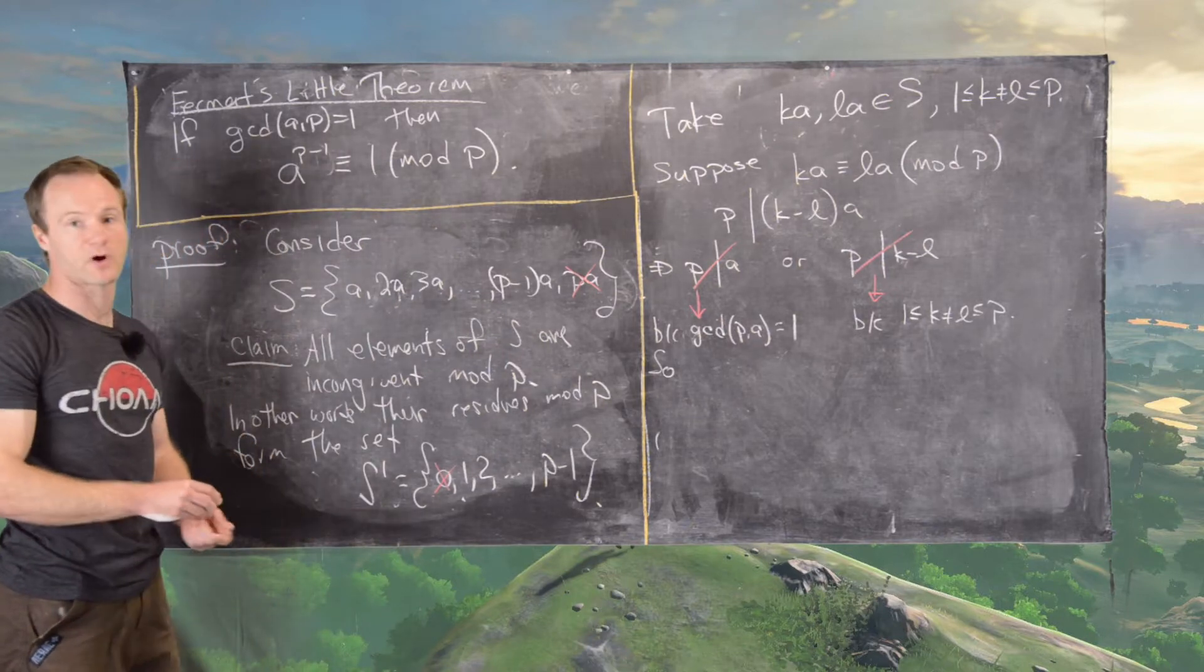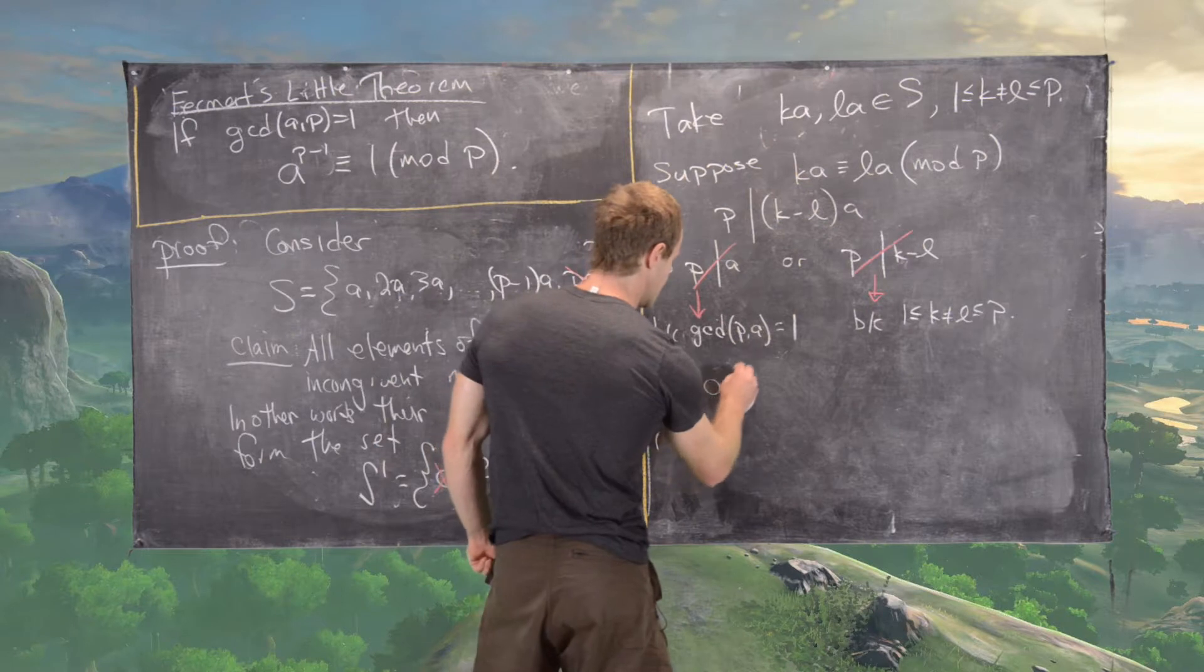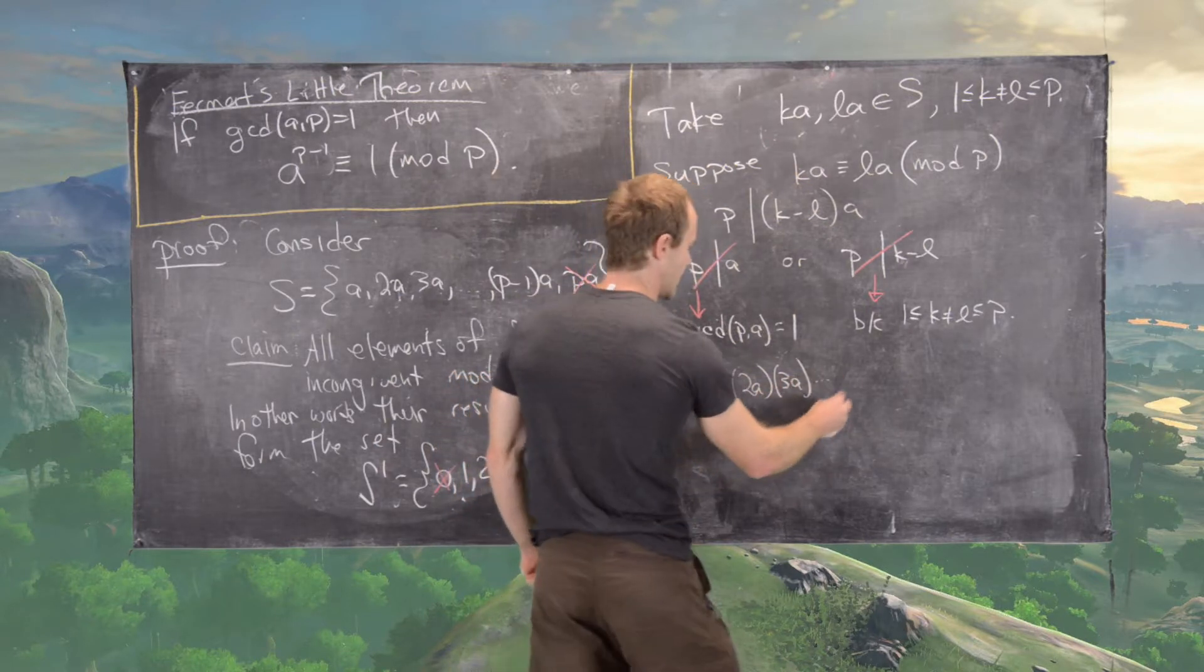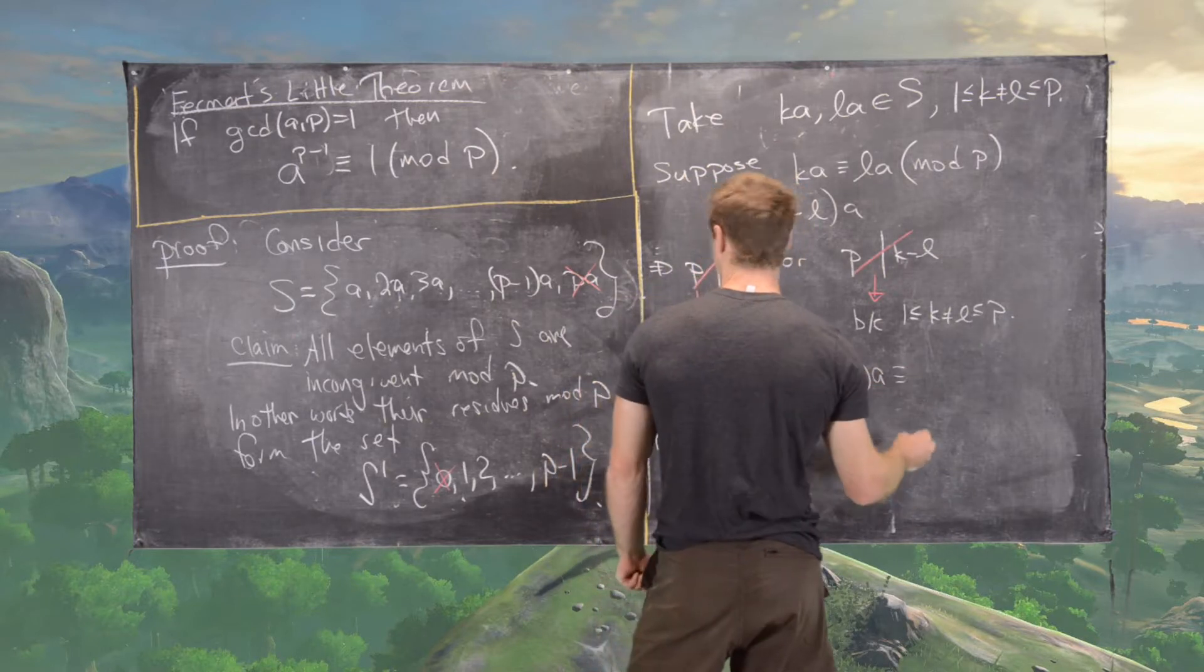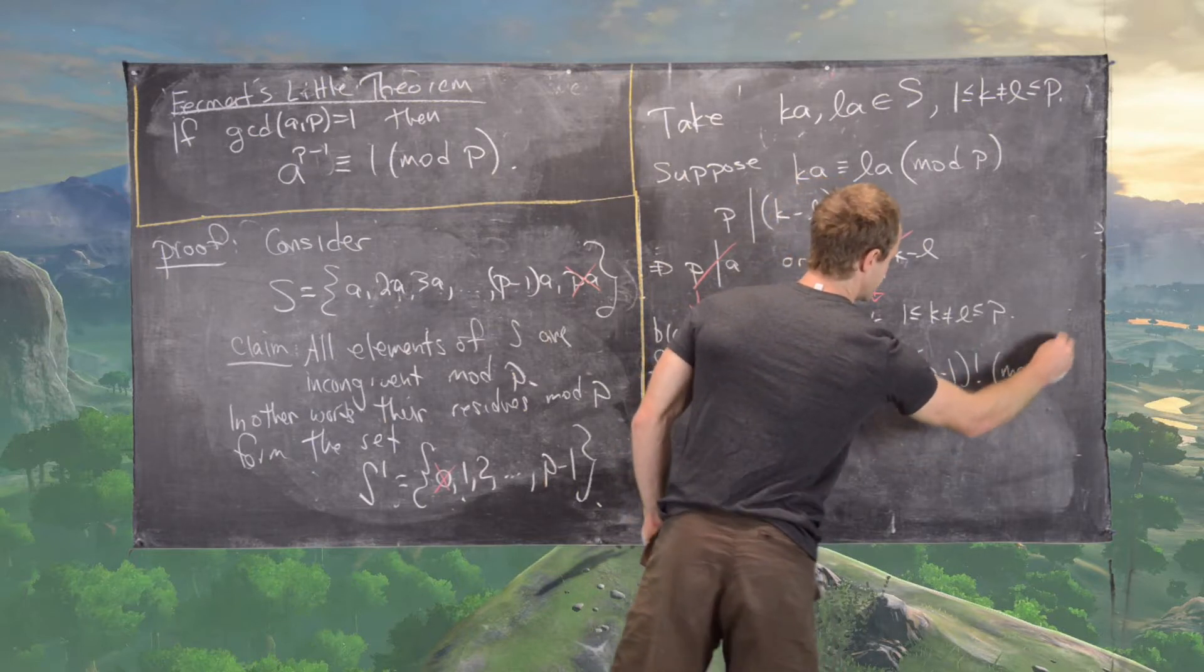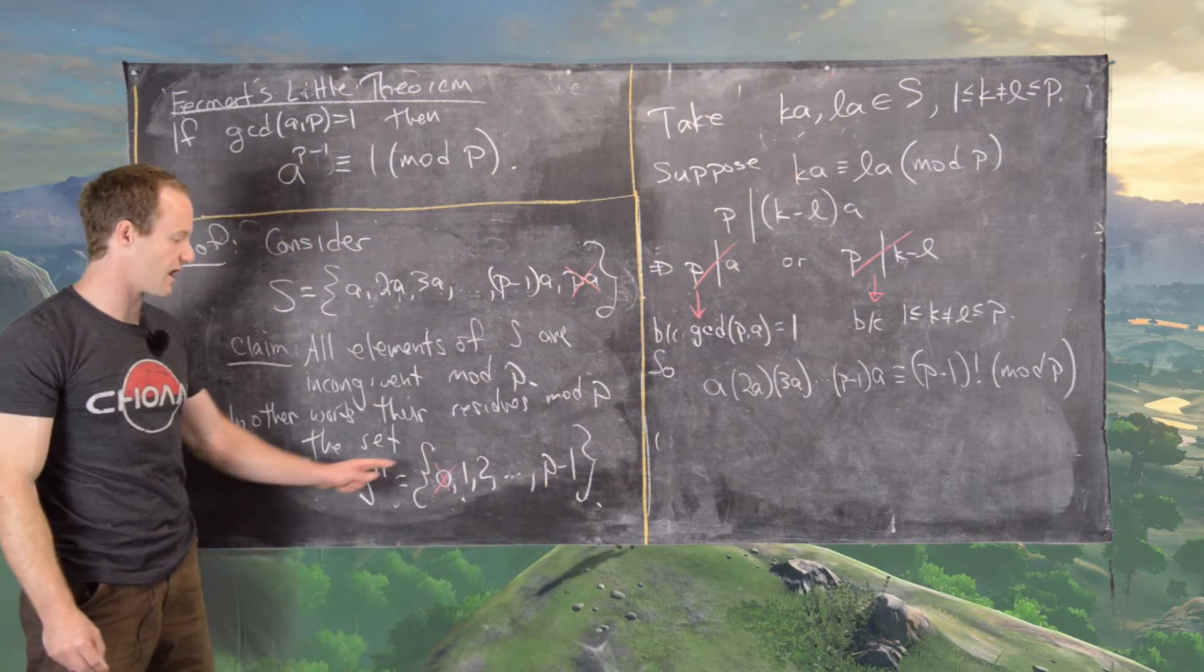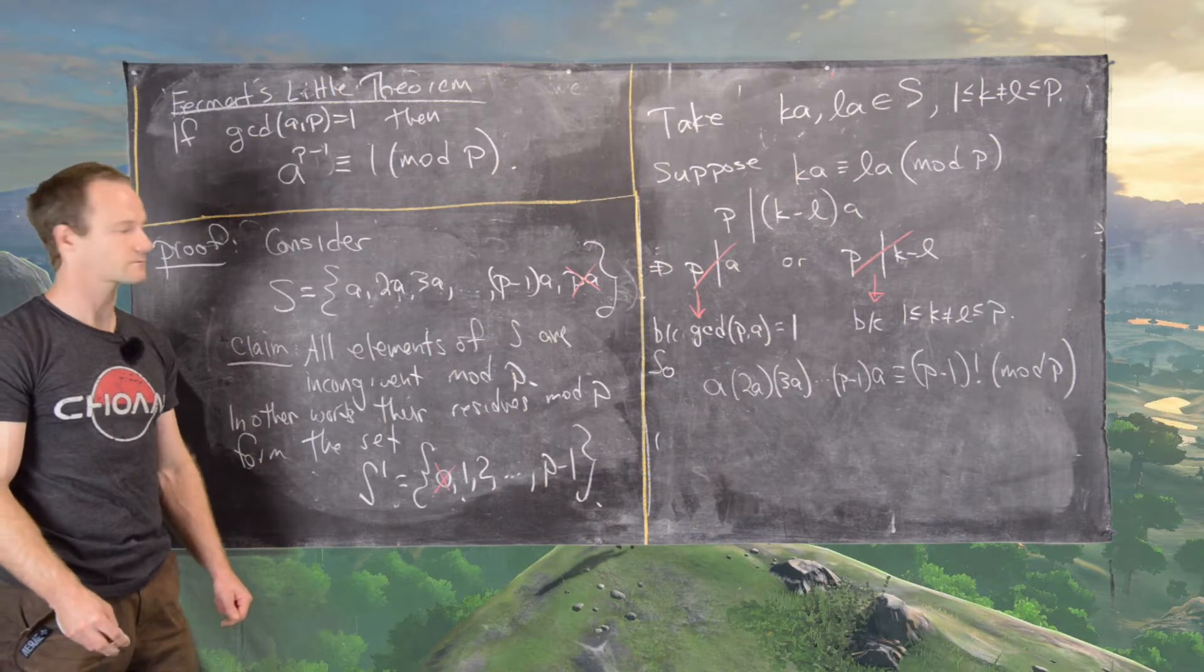So let's take 0 out of each one and now take the product of what's left over. So that tells us that A times 2A times 3A all the way up to P minus 1 times A is congruent to P minus 1 factorial mod P. Now notice because if we take the product of everything in S prime, we get 1 times 2 up to P minus 1, but that's P minus 1 factorial.